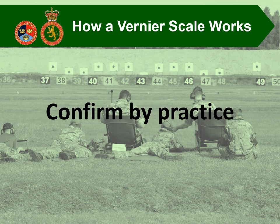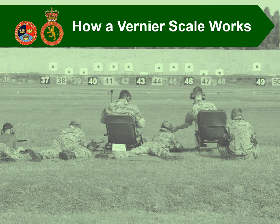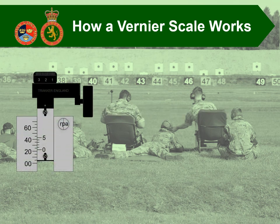We're going to have a little practice now with a few examples. For the first one, the 0 is between the 20 and the 25. Counting up the small graduations: 21, 22, and 23 for that example. Hopefully you all got the same.